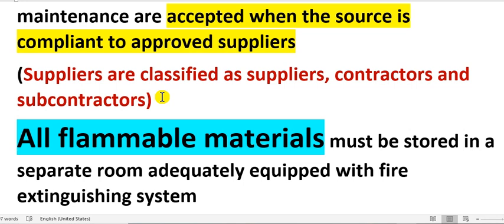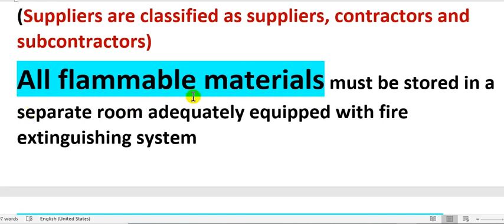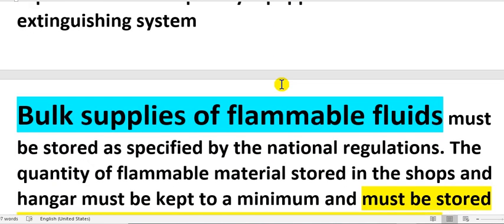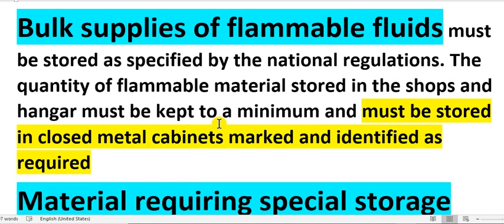From the EASA guide, all flammable materials must be stored in a separate room equipped with a fire extinguishing system. Bulk supplies of flammable fluids must be stored as specified by national regulation. The quantity of flammable materials stored in the shop and hangar must be kept to a minimum and stored in closed metal cabinets.